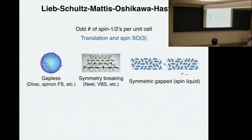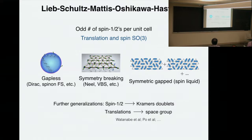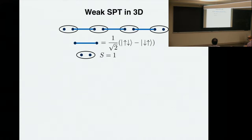More recently there have been many generalizations, replacing for example the spin-rotation symmetry with a smaller symmetry group like time-reversal symmetry, and you can also extend spatial symmetry from translations to other space groups or point groups. What I'm going to talk about is the generalization of these theorems to fermionic systems. Before that, let me give a slightly different perspective on the Lieb-Schultz-Mattis theorem through the bulk-boundary correspondence.